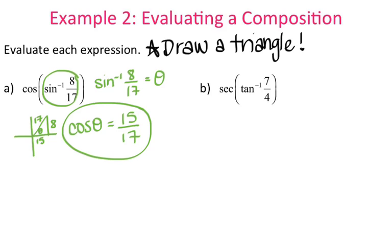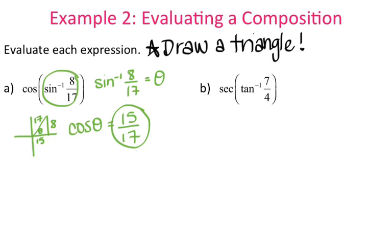You can check by plugging in: cosine of inverse sine of 8/17 gives 0.882, and 15 divided by 17 is also 0.882. So 15/17 is your answer.